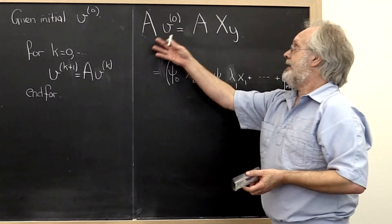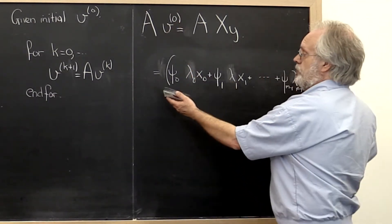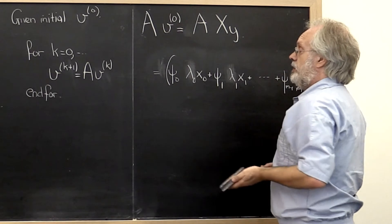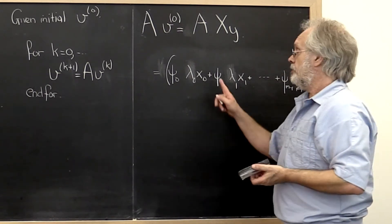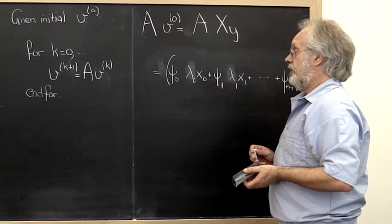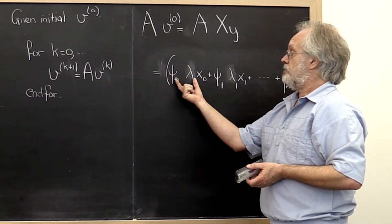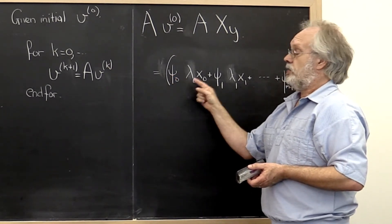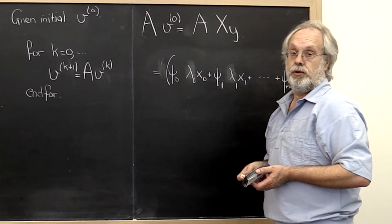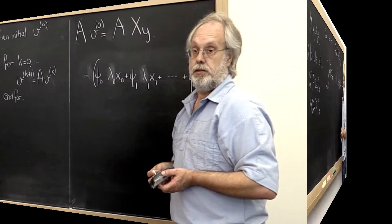So A times v0 leaves you with a different linear combination of the eigenvectors of A, where the coefficients now are the original coefficients but multiplied by the corresponding eigenvalue of A.